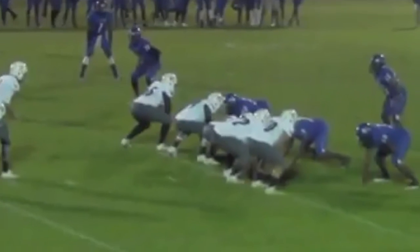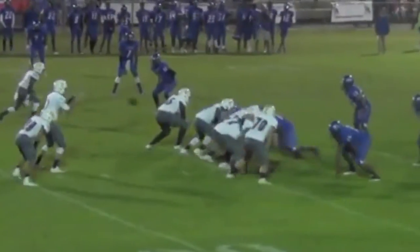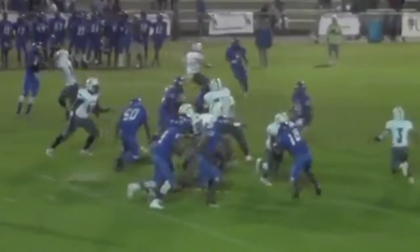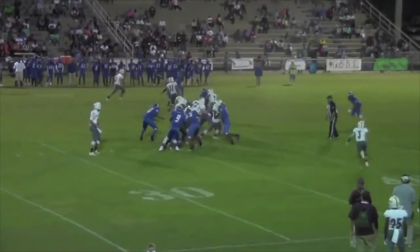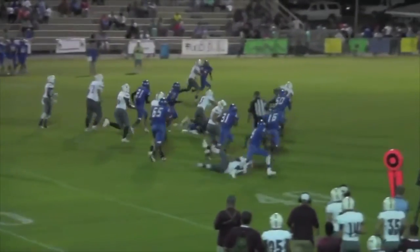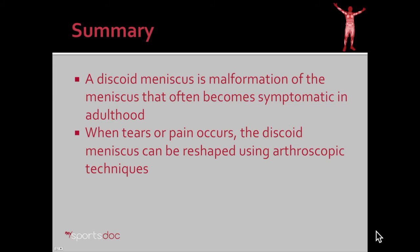This patient was actually in the middle of football season — you can see him there in the center of your screen, number 72. He was able to get back to fairly full function at four weeks with minimal pain. In summary, a discoid meniscus is a malformation of the meniscus that often becomes symptomatic in late childhood or adulthood. When tear or pain occurs, the discoid meniscus can be reshaped using arthroscopic techniques and often the patient will end up with a fairly normal meniscus in the end.